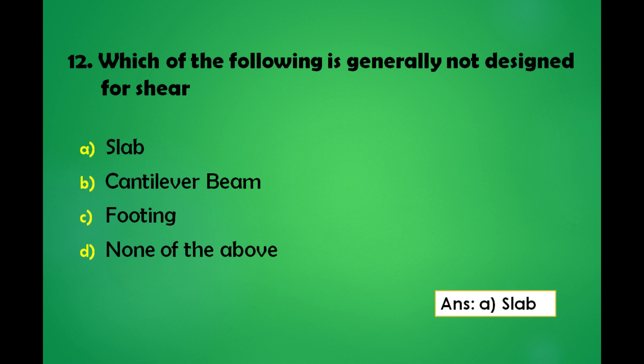Which of the following is generally not designed for shear? A) Slab, B) Cantilever beam, C) Footing, D) None of the above. The answer is: the slab is not generally designed for shear.